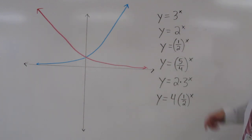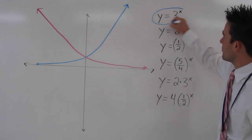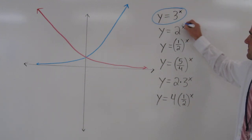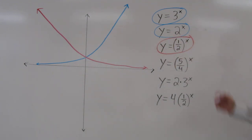This first one, because 3 is greater than 1, is exponential growth. So is this one. The next one, 1 half to the x power, would be decay, because 1 half is less than 1.